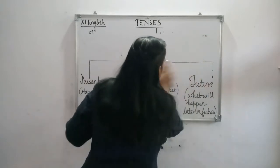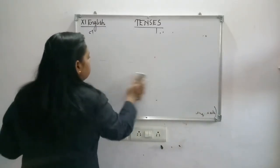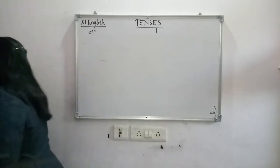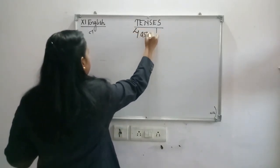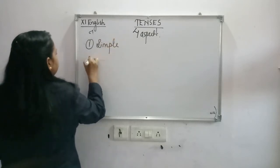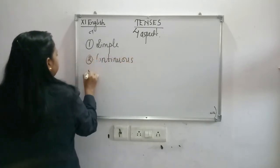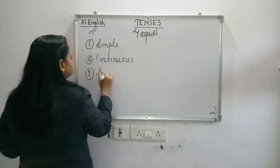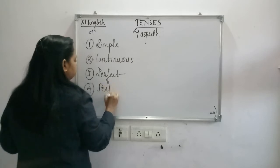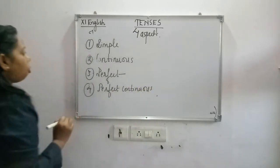All of you are requested to sit along with your pen and copy so that you can write down. The four aspects of tense are: number one is Simple, number two is Continuous, number three is Perfect, and number four is Perfect Continuous. These are the four categories or aspects of tense.